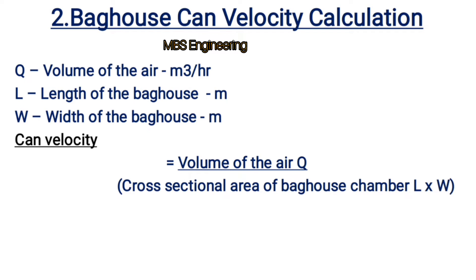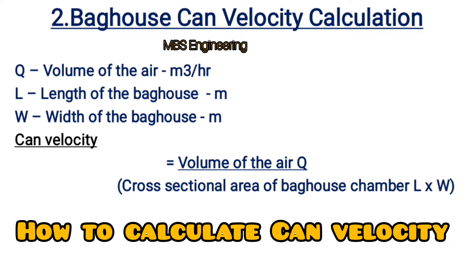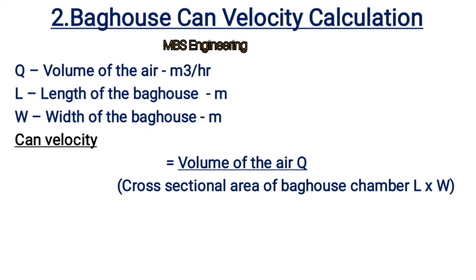Next, we discuss how to calculate the can velocity. Can velocity equals the volume of the air (Q) divided by the cross-sectional area of the bag house chamber. The legends are: Q — volume of the air in cubic meters per hour; L — length of the bag house in meters; W — width of the bag house in meters.